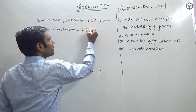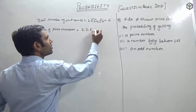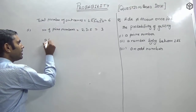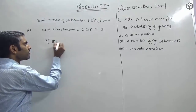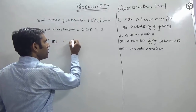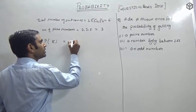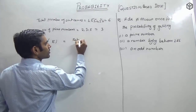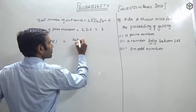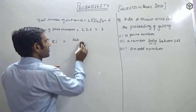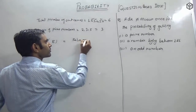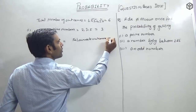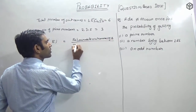Prime numbers are 2, 3, and 5 — so the total count is 3. Now I will apply the probability formula: P(E) = favorable outcomes of E upon total outcomes.